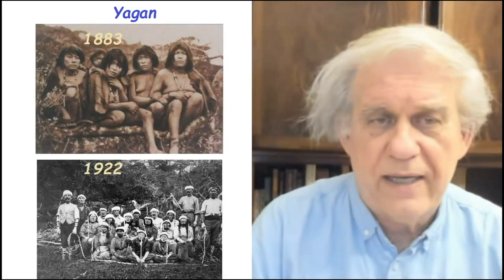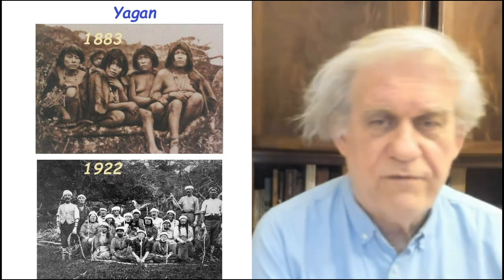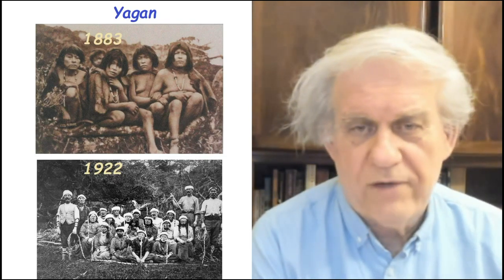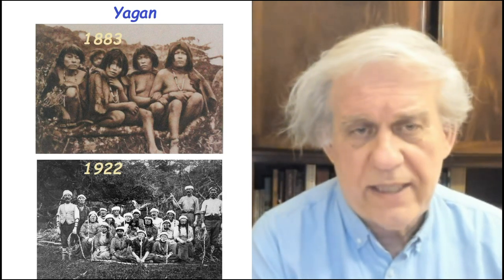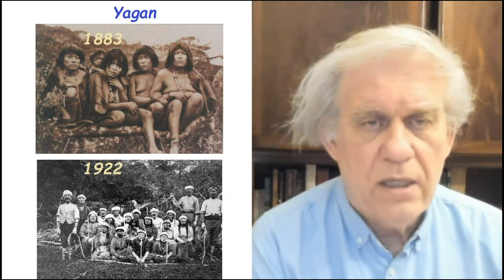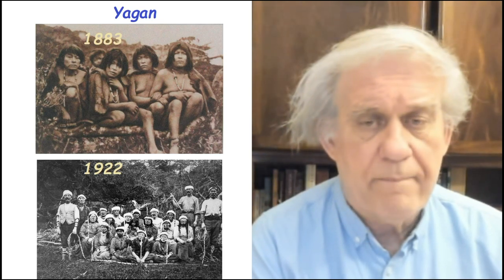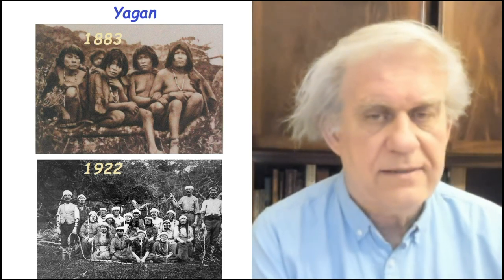And it was found by Mr. Darwin and Robert Fitzroy. And they were the Yagans. They were also known as the Fueginos because they're from Tierra del Fuego, south of Argentina and Chile. And that's in 1883. They were essentially nude. And this is 50 years after Darwin saw them. He saw them in 1833. And he put it in his diary.